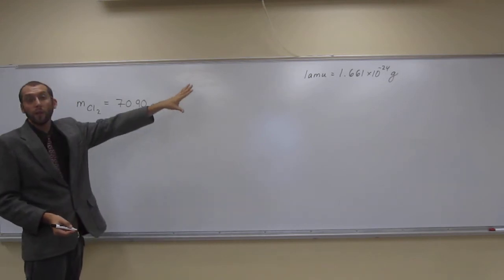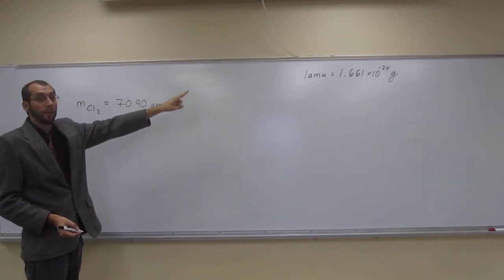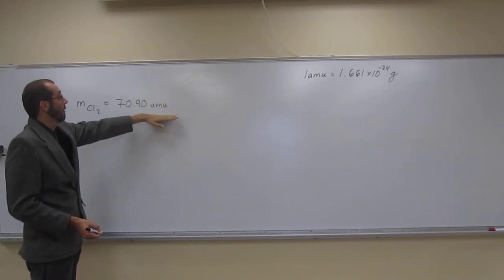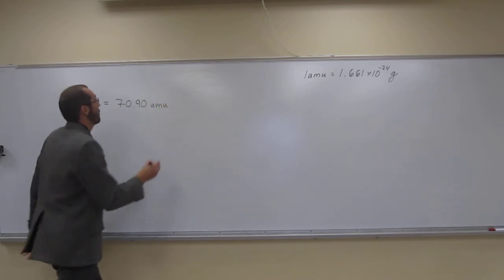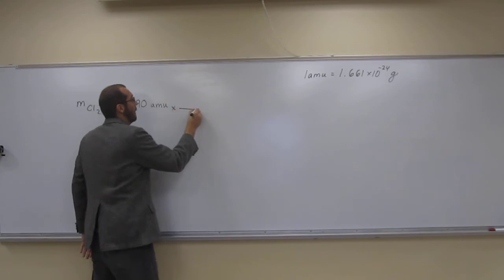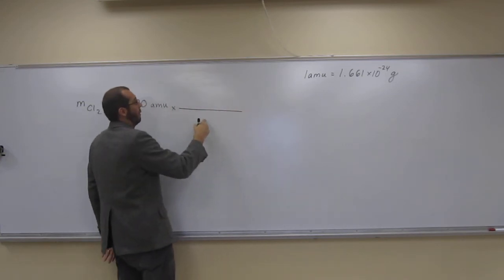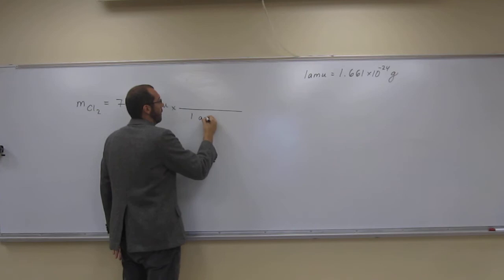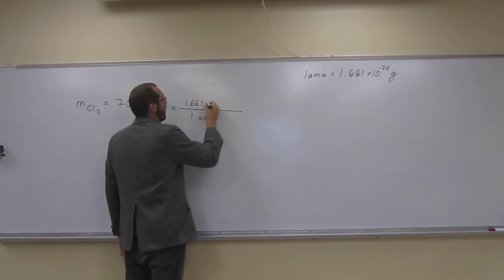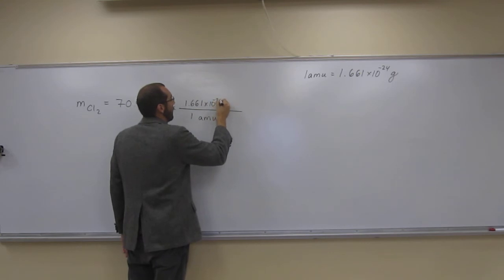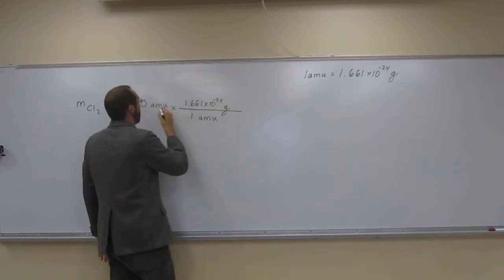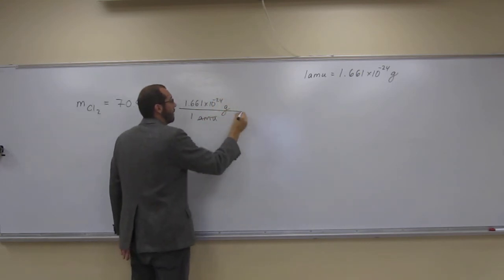Just use our conversion factor. Use that conversion factor from amu to grams, and it's just the one step, then you get your answer. So on the bottom here is 1 amu. On the top, 1.661 times 10 to the negative 24th grams. Notice that cancels with that.